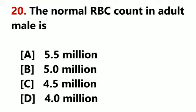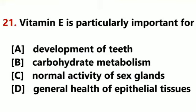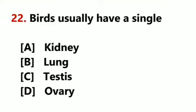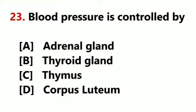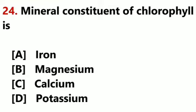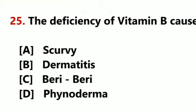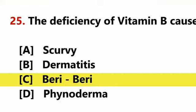The normal RBC count in adult male is 5.0 million. Vitamin E is particularly important for normal activity of sex glands. Birds usually have a single ovary. Blood pressure is controlled by the adrenal gland. Mineral constituent of chlorophyll is Magnesium. The deficiency of vitamin B causes Beriberi.